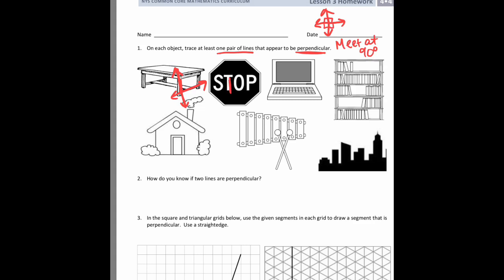The stop sign was a little difficult. The only one I could find was here at the T. Here on the computer screen I chose the bottom left corner of the screen part. Bookshelf, same thing, just the top corner. So again, we're just looking for right angles. So here on the house, where the door meets the ground. Here on the xylophone, where the first bar meets the top bar. And here on the cityscape, where the buildings meet the bottom.